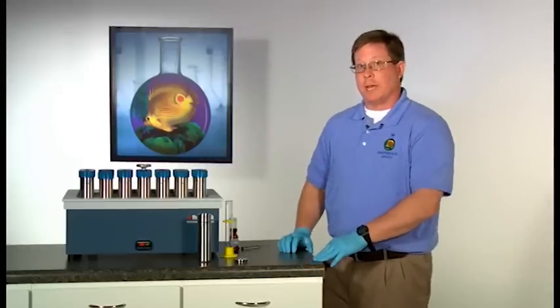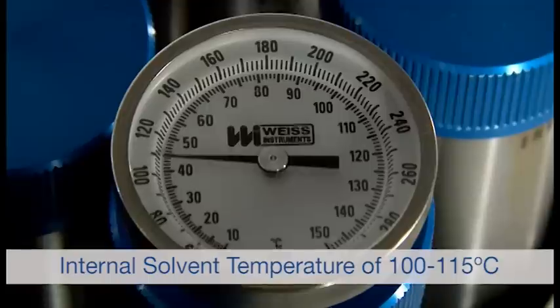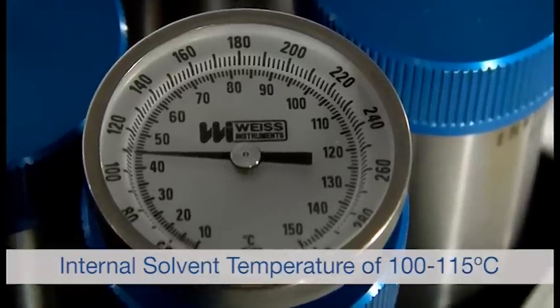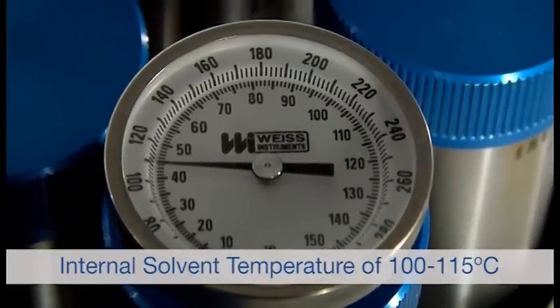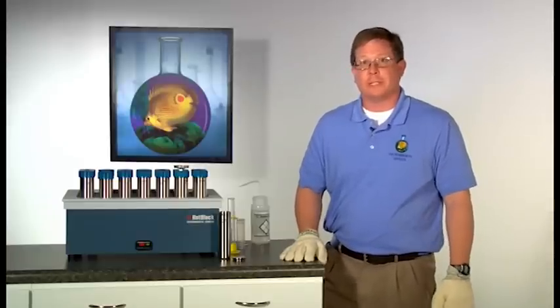The hot block should be set at 130 degrees Celsius. This will provide an internal solvent temperature of 100 to 115 degrees Celsius, which is required by method 3546. Samples should be heated for 30 minutes at the 130 degrees Celsius set point.